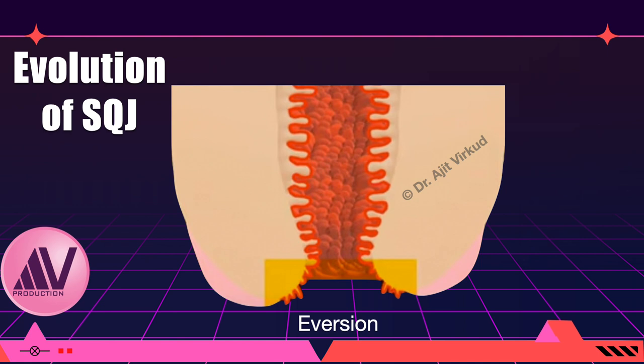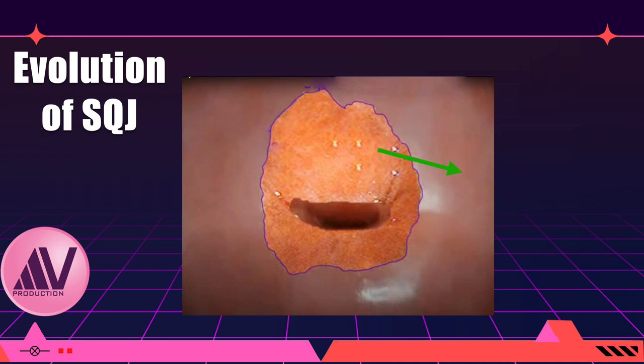The original squamo-columnar junction does not last for long — it evolves over time. In the post-pubertal period, after the maturity of the hypothalamus-pituitary-gonadal axis and establishment of menstruation, the original squamo-columnar junction starts to grow outwards under the influence of estrogen produced by the ovaries. Consequently, the cervix everts. The outward migration is more pronounced in excess estrogen states, for example pregnancy or use of oral contraceptive pills. The red velvety appearance on the ectocervix around the external os is referred to as ectropion.